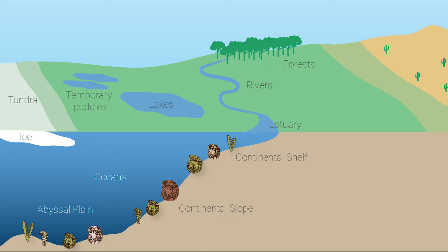Different types of foraminifera also respond to changes in food and oxygen availability at the seafloor. By examining changes in foraminifera in ancient sediments, we can reconstruct how oxygen and food availability changed with ancient climate changes and understand how modern climate change will affect ocean ecosystems.